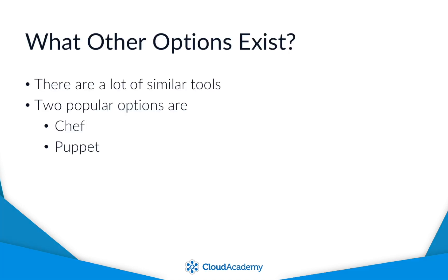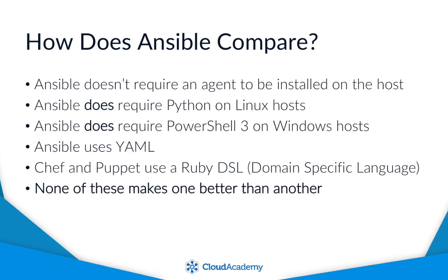Ansible isn't the only option when it comes to IT automation. There are quite a few tools out there that accomplish the same thing in different ways, and two popular options are Chef and Puppet. Ansible is a bit different than both of these in that it doesn't require an agent to be installed on the system that you're going to configure. However, it does require Python on any Linux servers you want to manage, and PowerShell on any Windows servers. Ansible uses the YAML syntax, whereas Chef and Puppet use a Ruby domain-specific language, though Puppet also offers its own syntax that you can use.